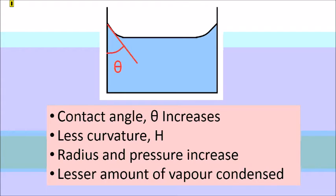If the angle increases, the curvature of meniscus will decrease. According to Kelvin equation, this will result in PV increasing, which means that a lesser amount of vapor will be condensing.